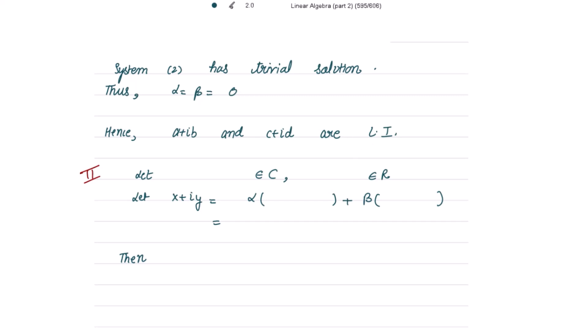The first condition is satisfied. Now for the second condition — to form a basis, the given vectors should be generators of the vector space. Take an arbitrary element x + iy from ℂ, where x and y are real numbers. We write x + iy as a linear combination of the given vectors a+ib and c+id. Mark this as equation (1). We need to find α and β in terms of x and y.